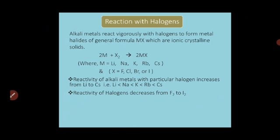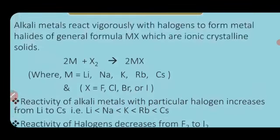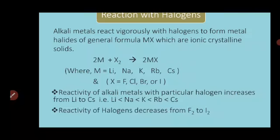The fifth reaction is reaction with halogens. Alkali metals react vigorously with halogens to form metal halides. For example, sodium reacts with chlorine gas to form sodium chloride, which we use as table salt. All these are salts and ionic in nature, but lithium compounds are covalent due to its small size. These metal halides are generally ionic crystalline solids. The general equation is: 2M + X2 → 2MX, where M is lithium to cesium and X is fluorine, chlorine, bromine, or iodine.